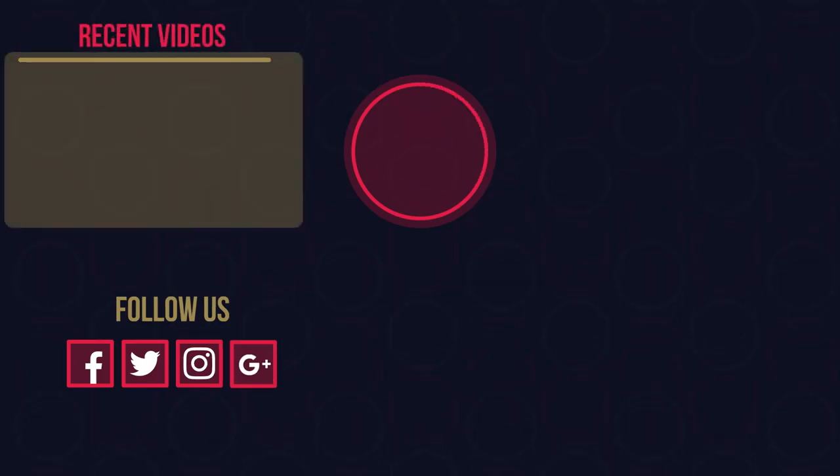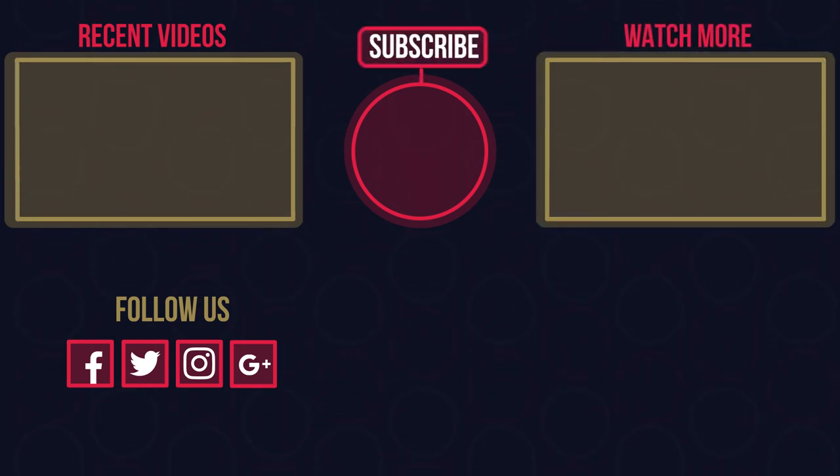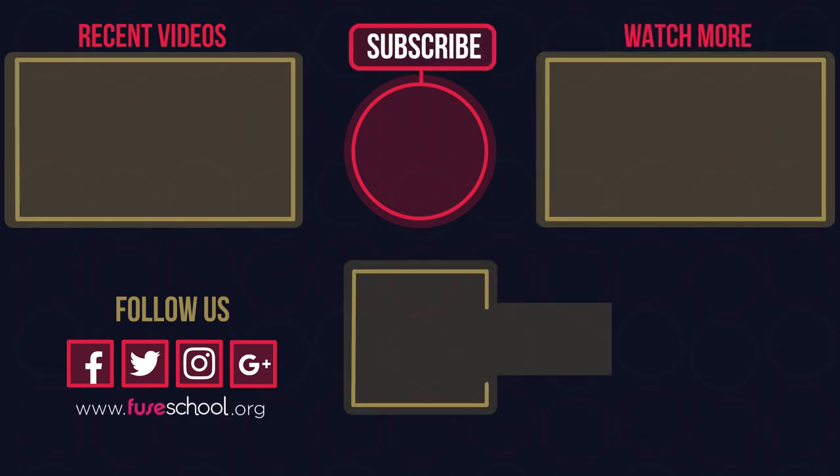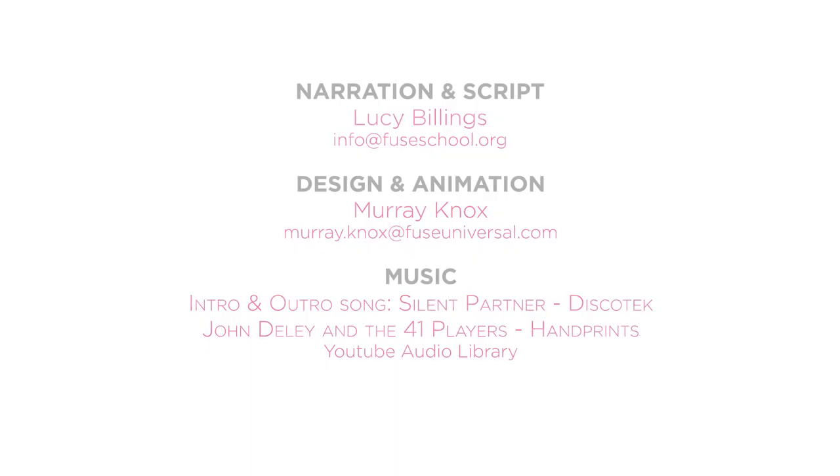So there we have the first four circle theorems. Watch part two and part three to discover five more which involve tangents and chords and take us outside of the circle. If you liked the video, give it a thumbs up and don't forget to subscribe. Comment below if you have any questions. Why not check out our Fusco app as well. Until next time.